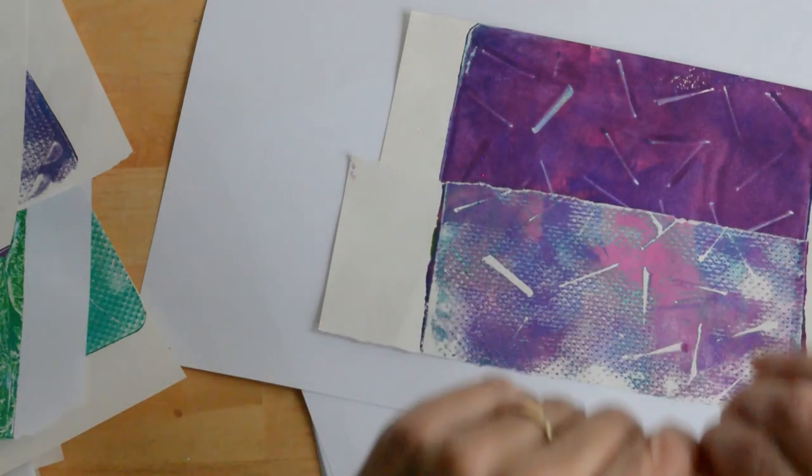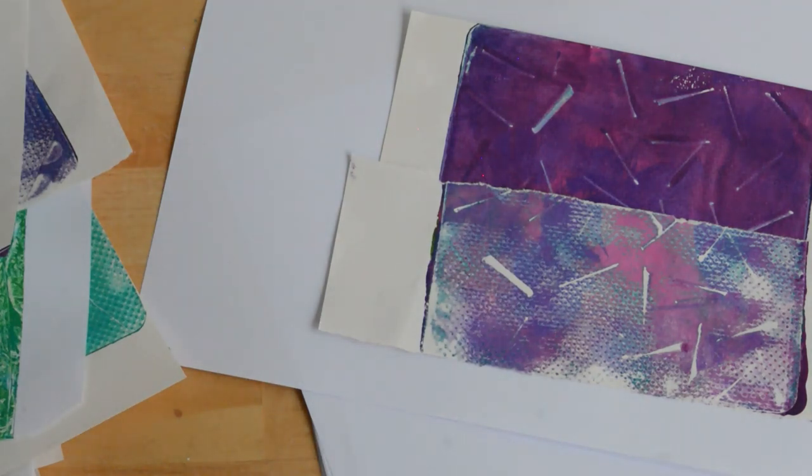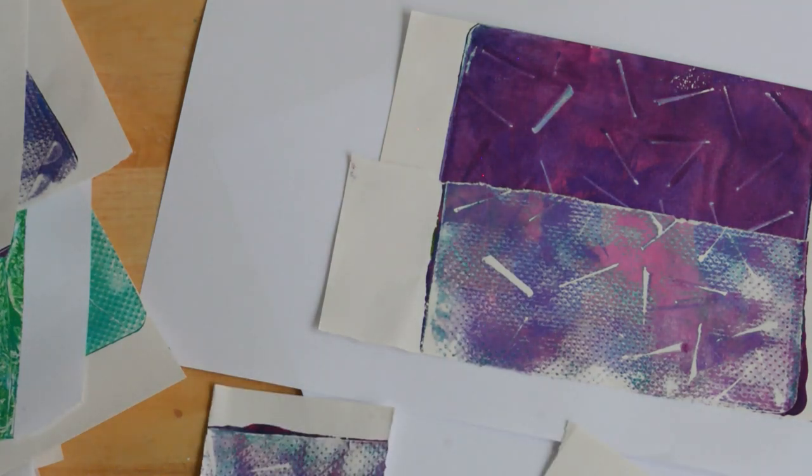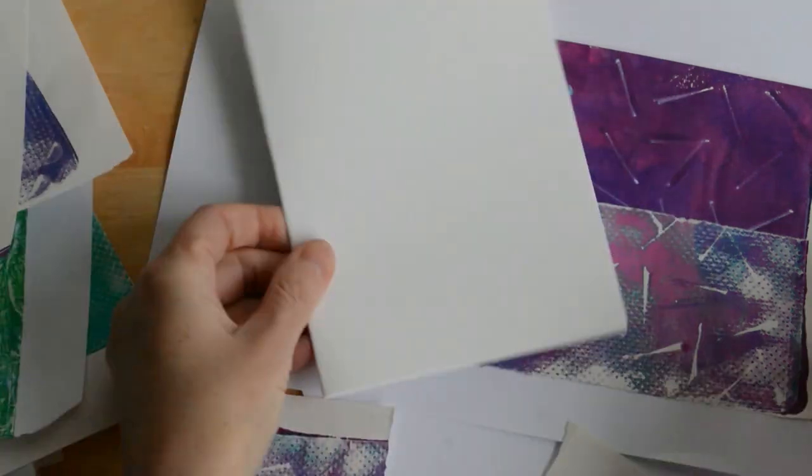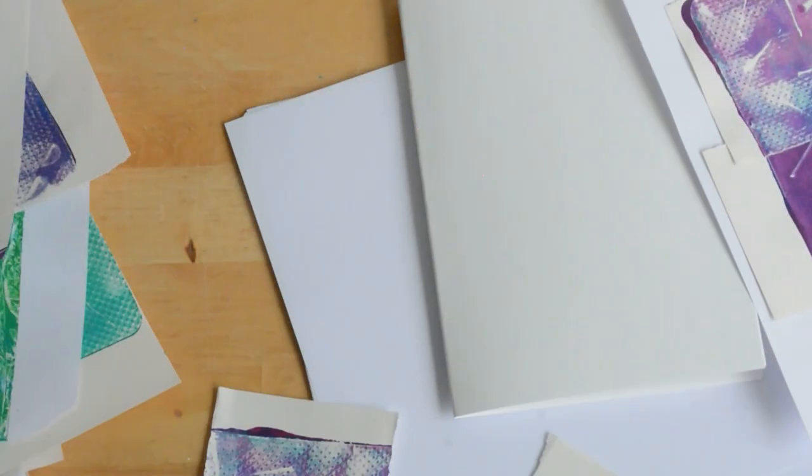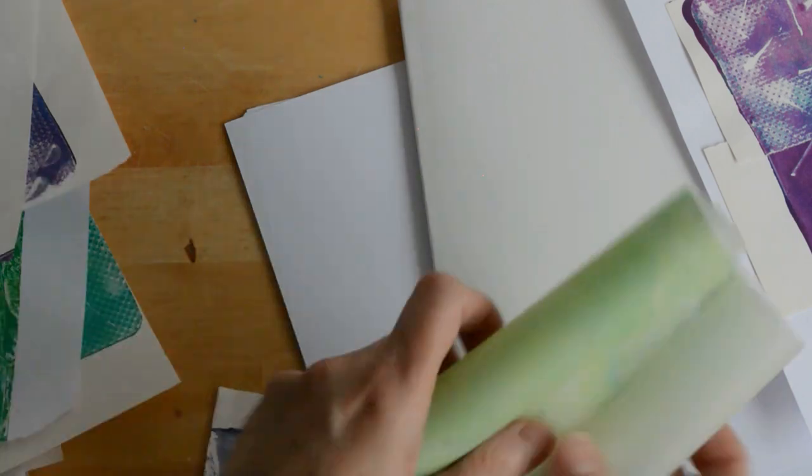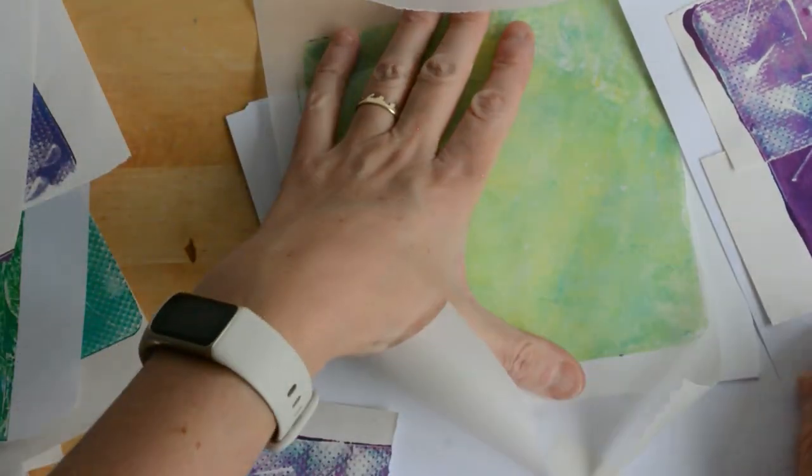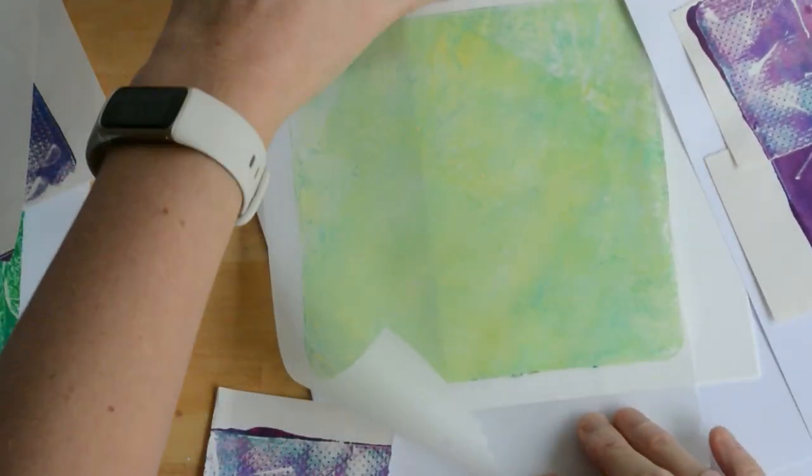I've also printed quite a lot onto tracing paper because I love tracing paper. That gives a semi-transparent see-through effect. I'm going to lay all that up and use it as a base layer for my Christmas card.